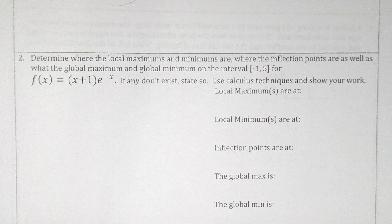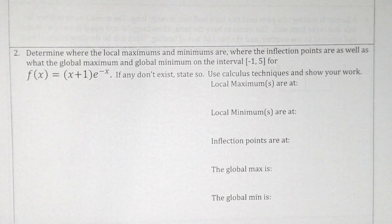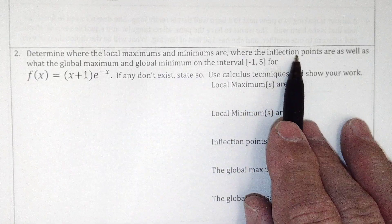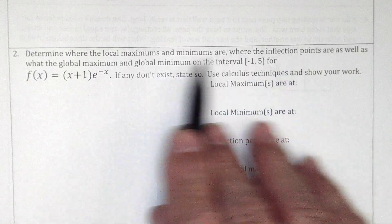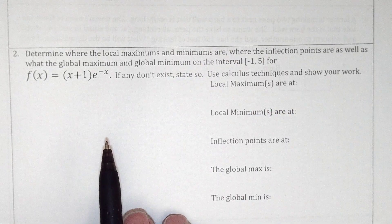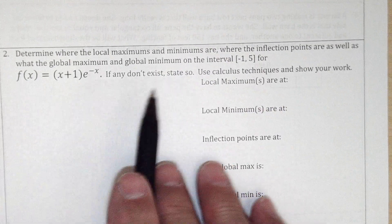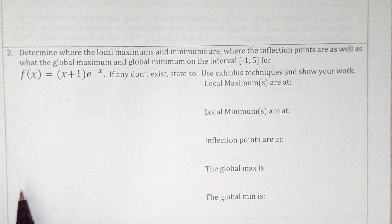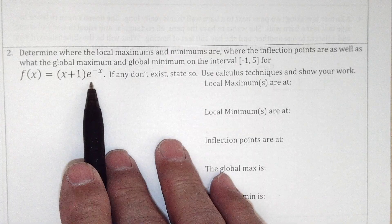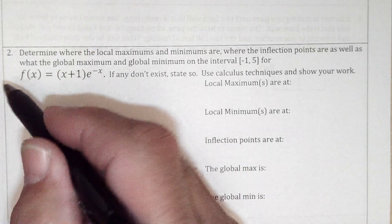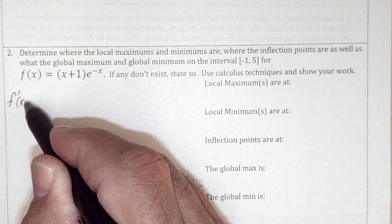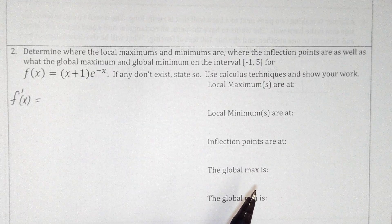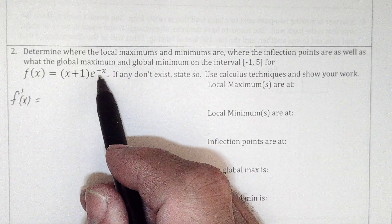Number 2. People really struggled taking the derivative of this one. We're supposed to find local max, mins, and inflection points. Max and mins happen when the first derivative equals 0; inflection points happen when the second derivative equals 0. We need to take the derivative of this function, and many of you didn't apply the chain rule on e to the negative x.